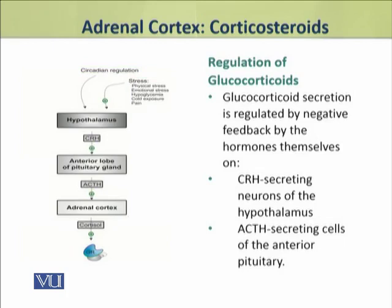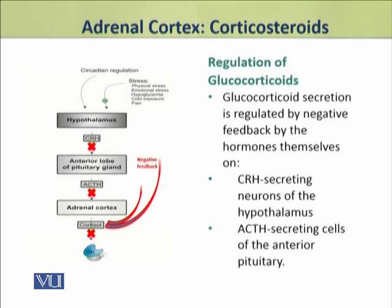Now we shall discuss how the secretion of glucocorticoids is regulated. When the secretion of glucocorticoids becomes excessive, they provide negative feedback to the corticotropic releasing hormone from the hypothalamus and ACTH-producing cells of the pituitary. As a result, the release of CRH and ACTH is reduced, and consequently the secretion of cortisol also decreases. In this way, a negative feedback mechanism regulates the secretion of corticosteroids.